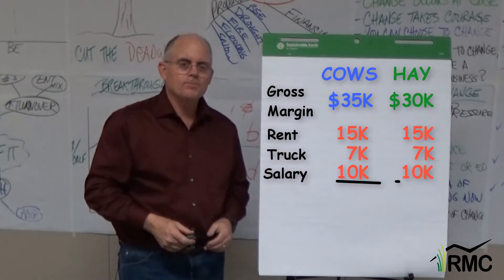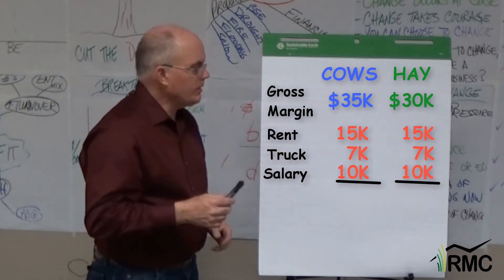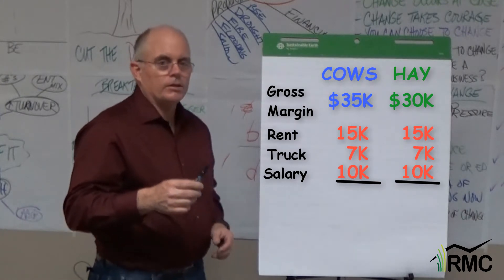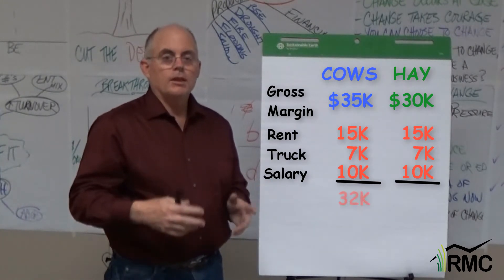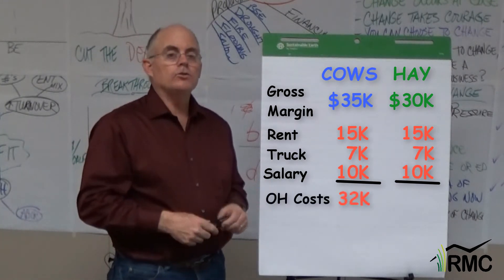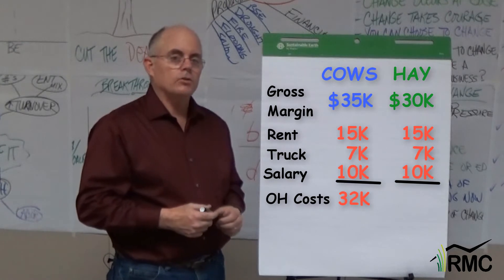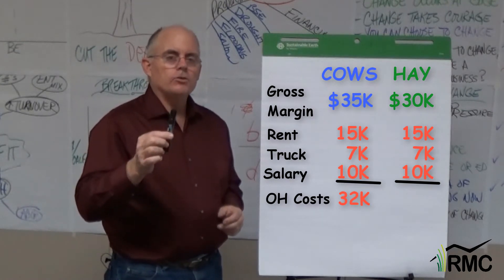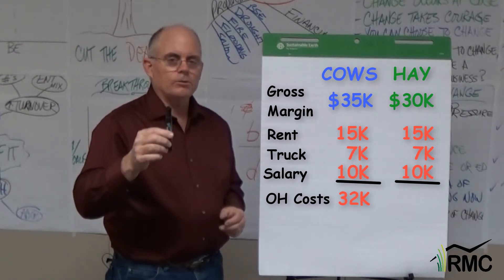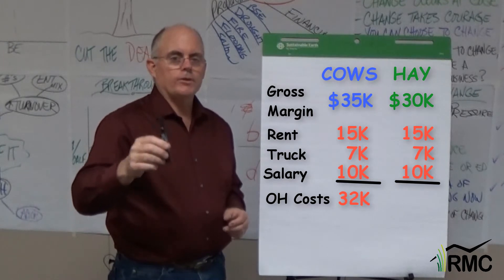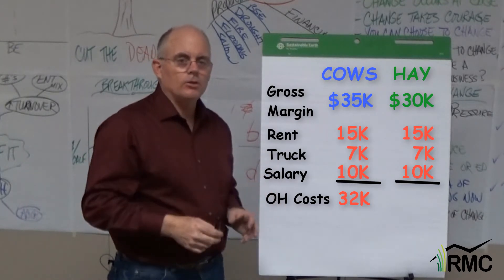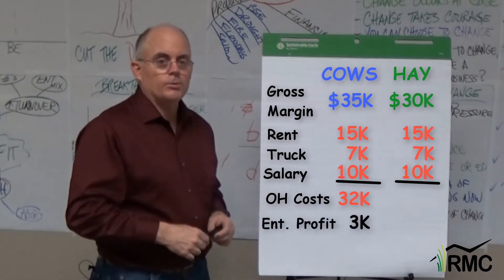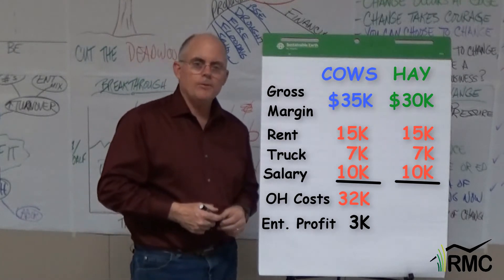Now let's do the math. $15,000 for rent, $7,000 for the pickup, and $10,000 for labor — that's $32,000 of overheads. My cattle gross margin is $35,000, minus the $32,000 of overheads allocated to that enterprise, so my cattle enterprise made a $3,000 profit.